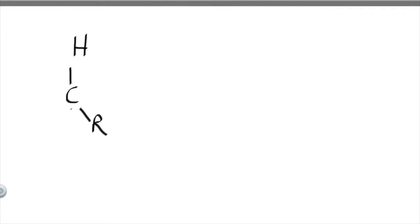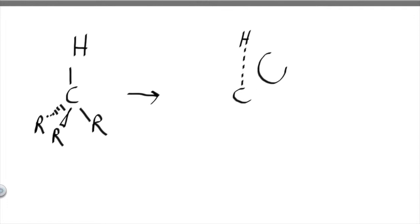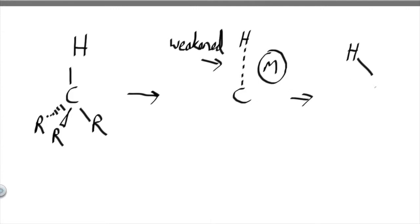The main goal of CH activation is the transformation of a strong carbon-hydrogen bond into a weaker, more readily functionalised bond. The aim is to break an inert CH bond using a metal centre.